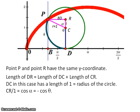DR is equal to the length of DC plus CR. And we know that DC has a length of 1 because it's a radius of the circle.